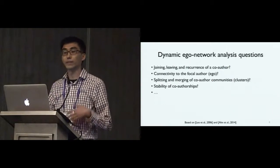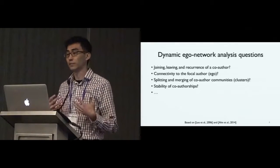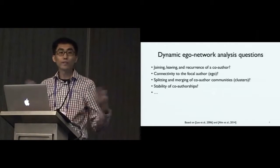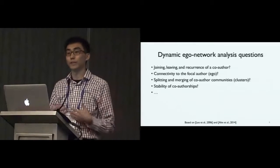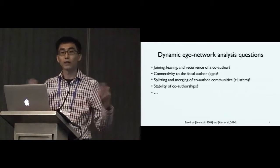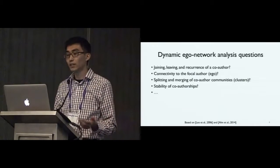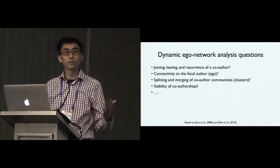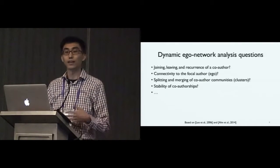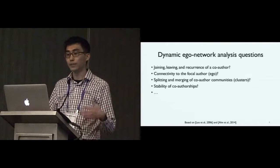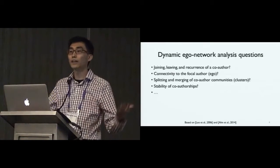Those approaches have their own limitations. Most importantly, most of the work focuses on whole-network analysis — tracking changes of the entire network — whereas egocentric analysis focuses on the macro level, more on the nuances between the ego and specific authors. So we can ask many questions about dynamic ego networks: when do co-authors join, leave, or redraw the network? How do they connect — direct connection or not? What are the temporal dynamics of communities, and what is the stability or turnover rate of the network?